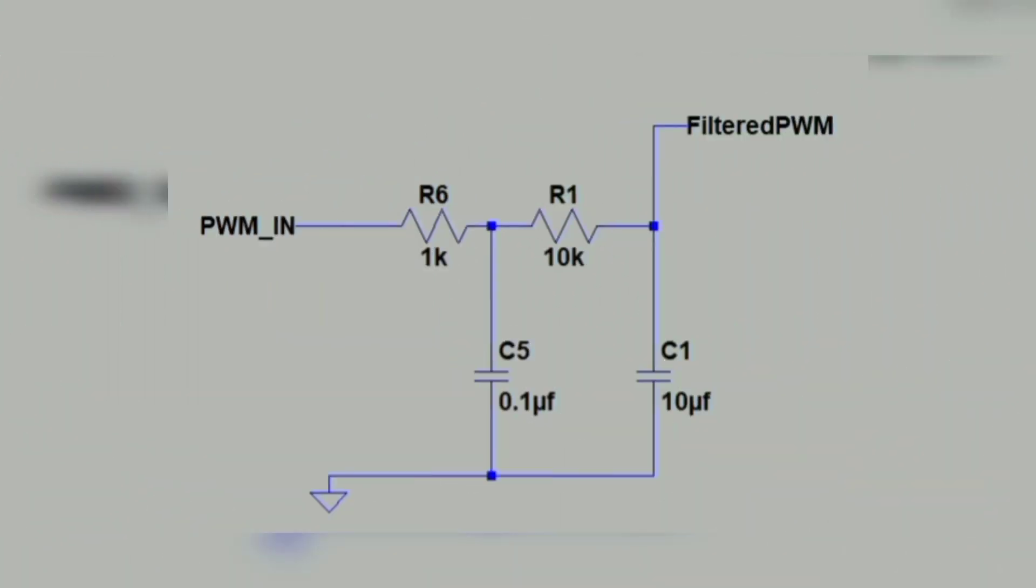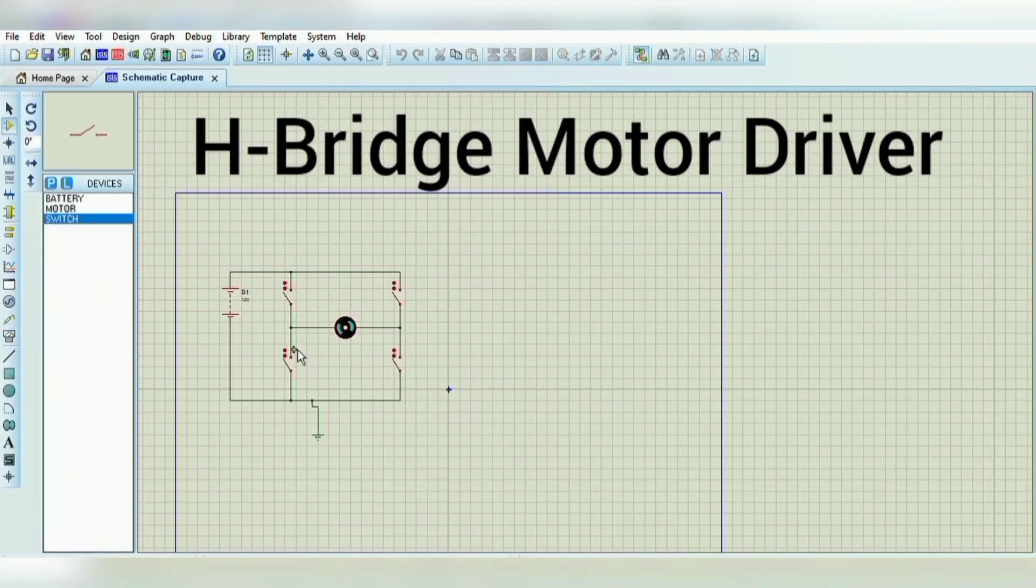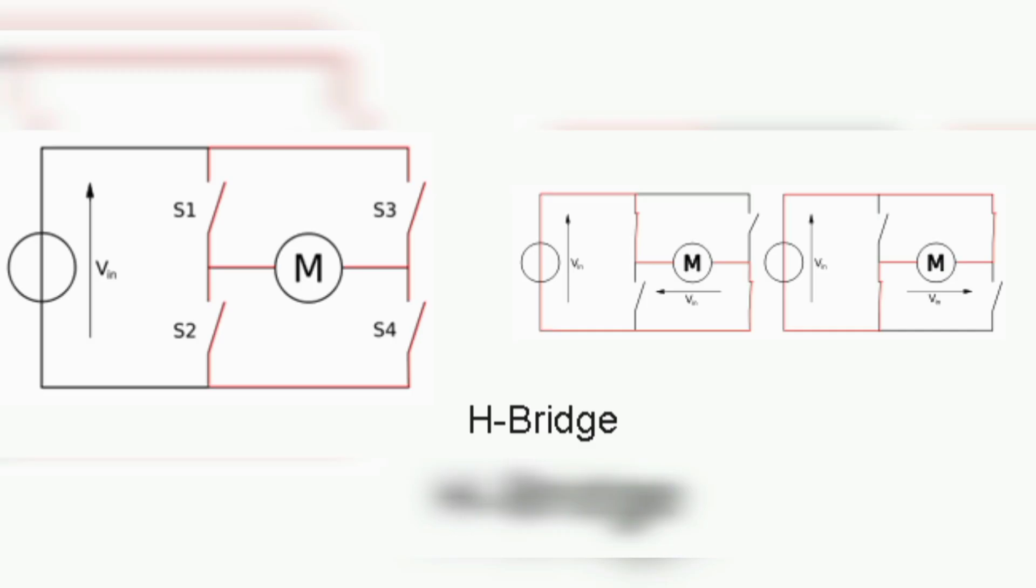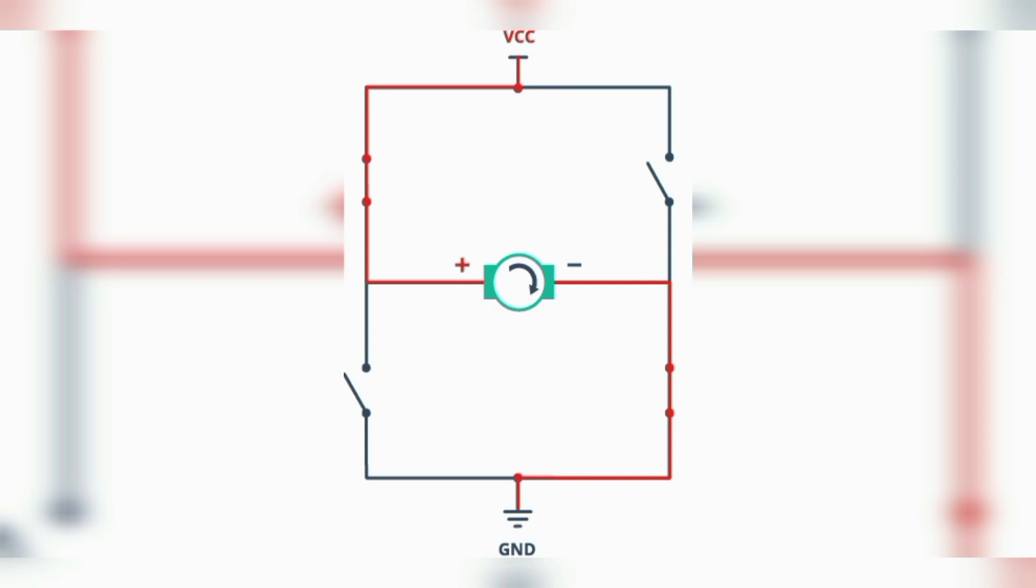Next basic electronics for embedded systems is the H-bridge motor driver. It's used for controlling direction. Controlling motor direction and speed is achieved using the H-bridge circuit and is essential for robotics. To make your robots move forward or reverse, you need an H-bridge circuit. It allows currents to flow in both directions, just like reversing your car. So H-bridge is an essential electronics for embedded systems.